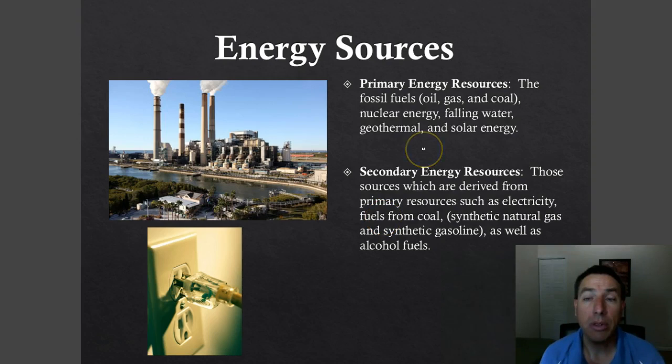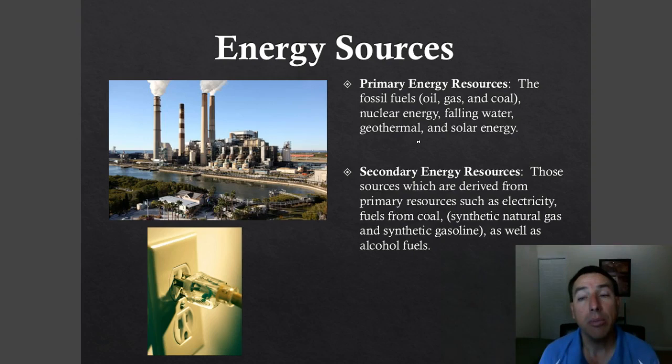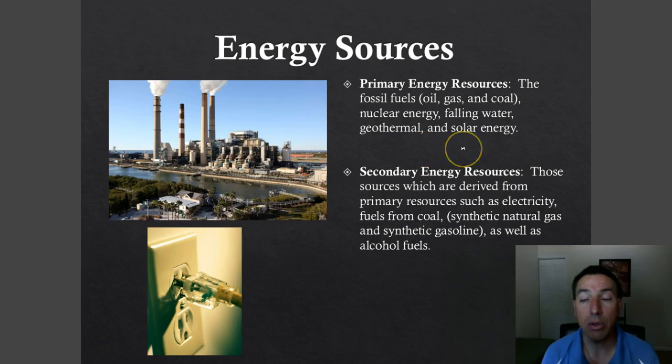When we talk about energy sources, we're going to talk about primary energy versus secondary energy sources. Primary energy sources are things we directly get energy from — fossil fuels, hydroelectric from falling water when we make dams, geothermal from the earth, solar energy directly from the sun. When we take those energy resources and create some other type of energy with them, we get secondary energy resources. Electricity is a secondary type of energy source.